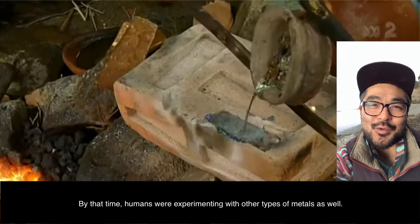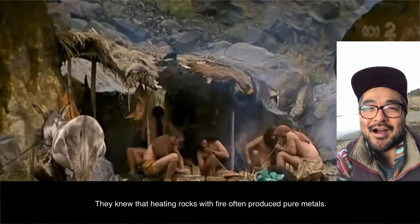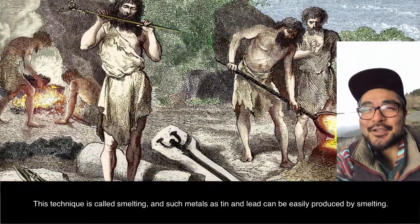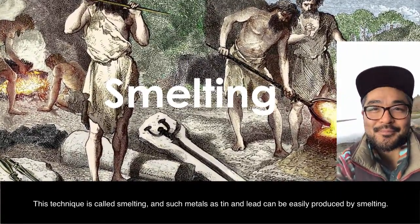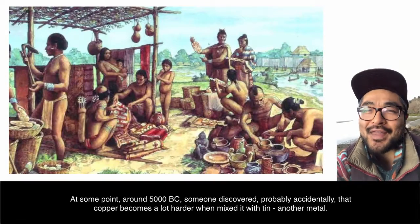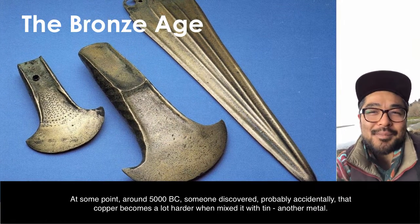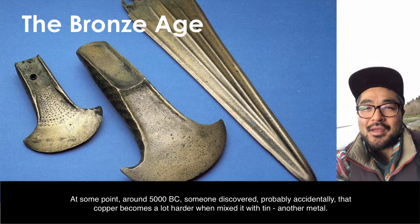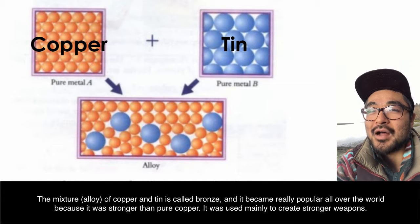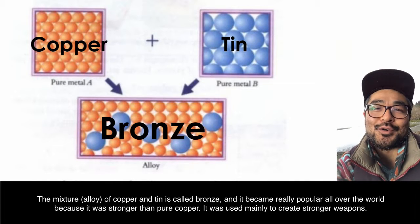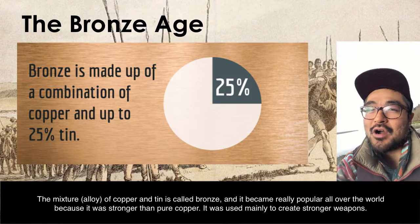By that time, humans were experimenting with other types of metals as well. They knew that heating rocks with fire often produced pure metals — a technique called smelting. Metals such as tin and lead can be easily produced by smelting. Around 5000 BC, someone discovered, probably accidentally, that mixing copper with tin makes it a lot harder. This mixture of copper and tin is called bronze, and it became really popular because it was stronger than pure copper, used mainly to create stronger weapons.